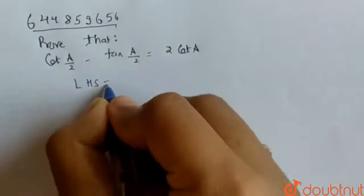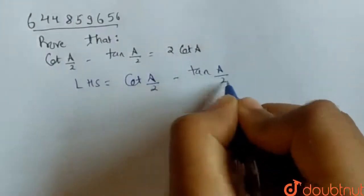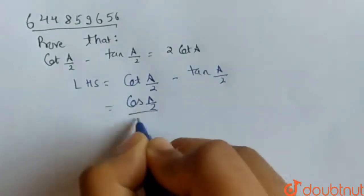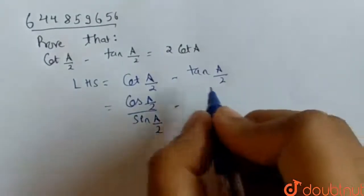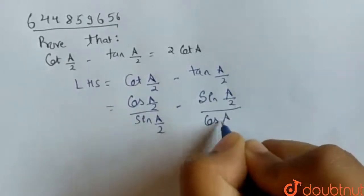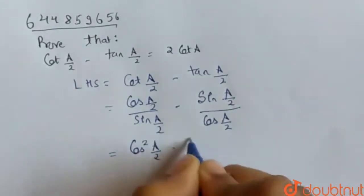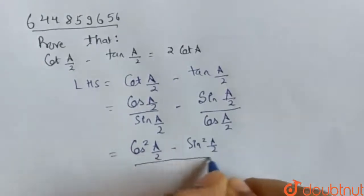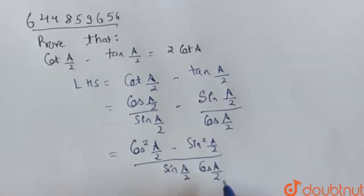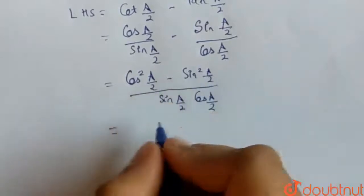LHS equals cot(a/2) minus tan(a/2). We write cot(a/2) as cos(a/2) over sin(a/2), and tan(a/2) as sin(a/2) over cos(a/2). Taking the LCM, we get cos²(a/2) minus sin²(a/2) over sin(a/2)·cos(a/2). Now, cos²(a/2) minus sin²(a/2) equals cos(a).